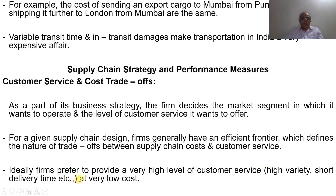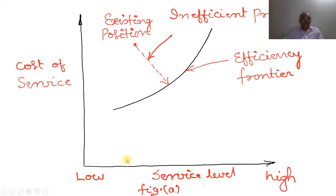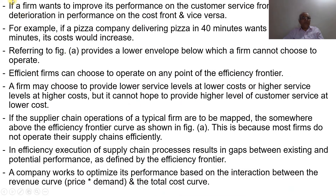Ideally, firms prefer to provide very high customer service — meaning high variety and short delivery time at very low cost. The efficiency frontier curve separates efficient from inefficient practices. Points above the curve represent inefficient practices, as this is how the cost of service relates to service level.